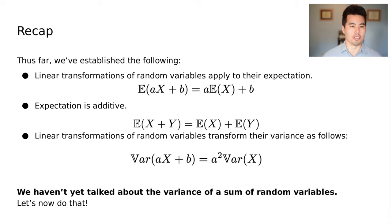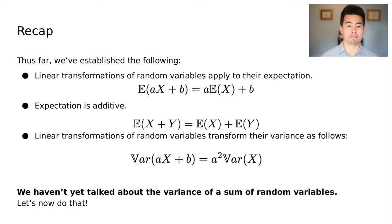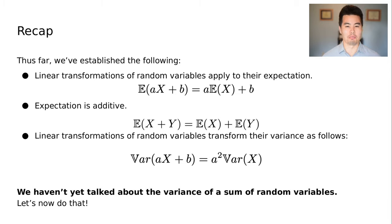To recap quickly: linear transformations of random variables can be done to the expectations just as they can to the actual variables. Expectation is additive between sums of variables. But transformations that scale variables scale the variance with the square of that scaling factor.